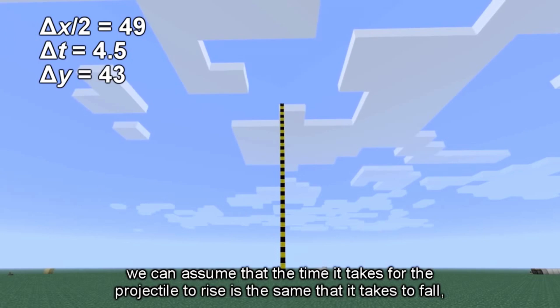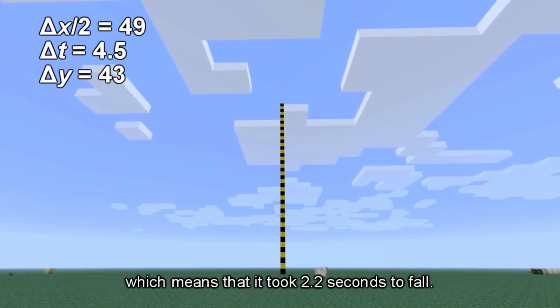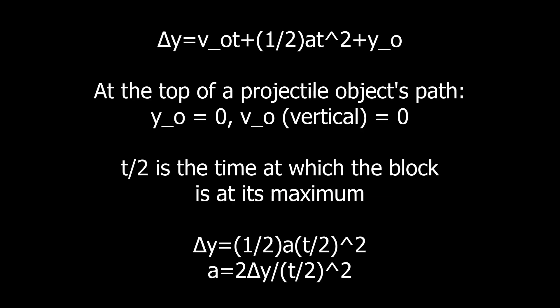In Minecraft, gravity acts differently on certain objects. However, in most cases we can solve for the acceleration due to gravity using a very simple formula: y equals v0t plus 1/2 at squared plus y initial. Solving for a, we find it equal to 2y over (t/2) squared, where t is the time from the initial launch and y is the height.